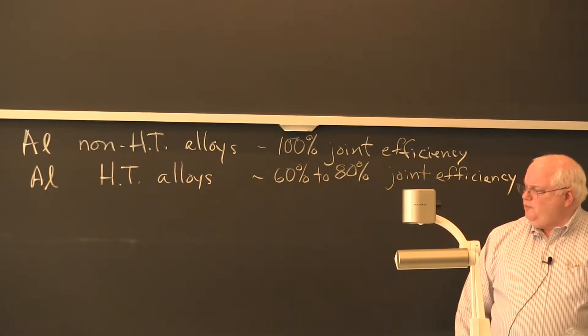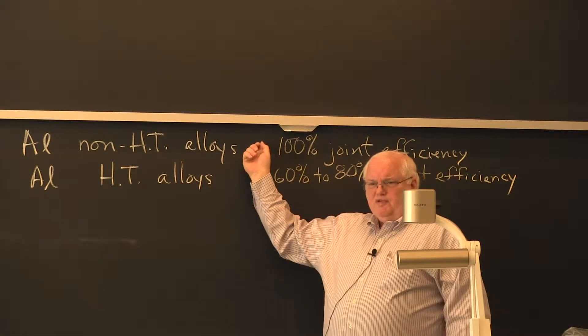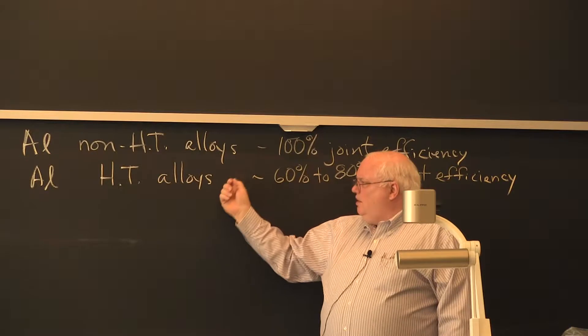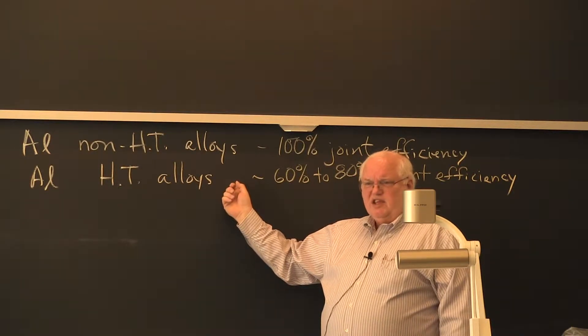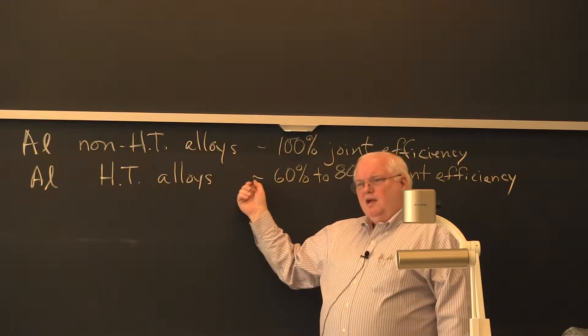Then there's the heat-treatable aluminum alloys. The difference here is these alloys might be 30 KSI type of strength. These can be 50, 60, or 70 KSI strength. There's double the strength.